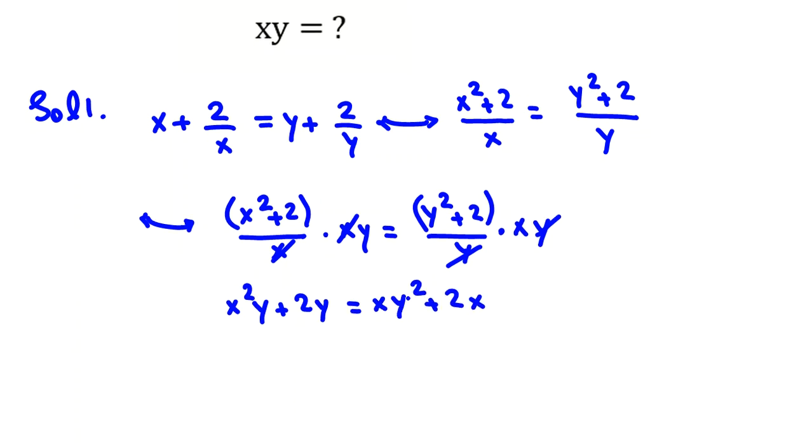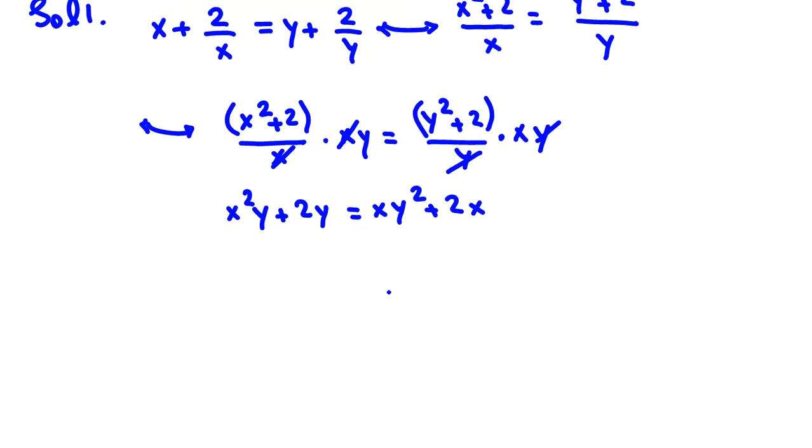When you are working with real numbers, in most problems you should take all things to one side to reach zero. Here you say, x squared y plus 2y minus xy squared minus 2x equals zero.